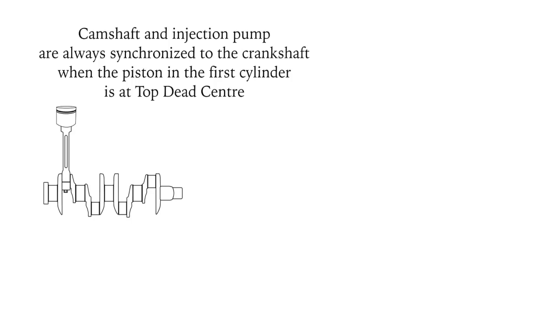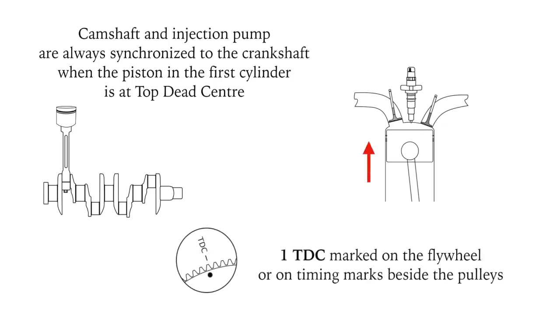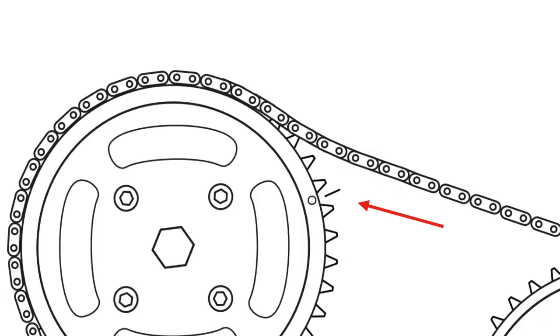The crankshaft and camshaft must be in the correct positions when they are synchronized by the timing belt, timing gears, or timing chain. Otherwise, a valve may open on the wrong stroke of the piston. Timing is always marked from when the piston in the first cylinder is at top dead center. Note the timing mark.